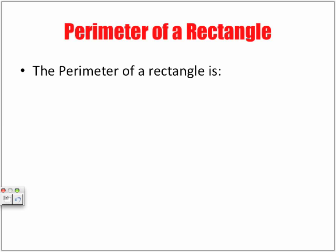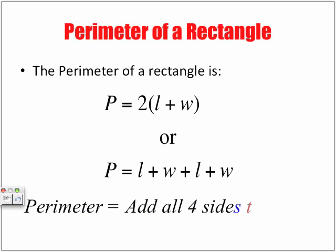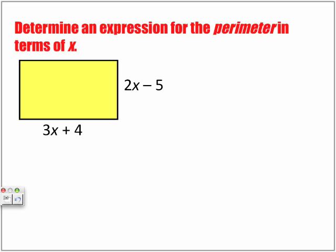Perimeter of a rectangle. Perimeter of a rectangle is P is equal to 2 multiplied by L plus W. Or, to make things a lot simpler, just add up all the sides. P is equal to L plus W plus L plus W. Perimeter is add all four sides together. Whatever the sides are equal to, just add them together.